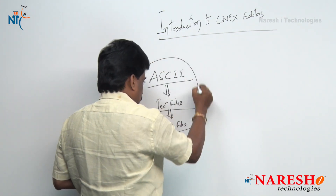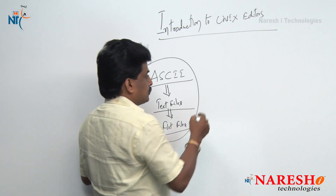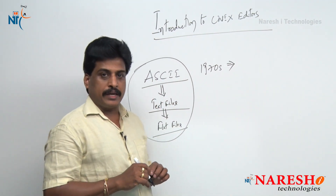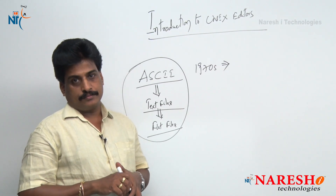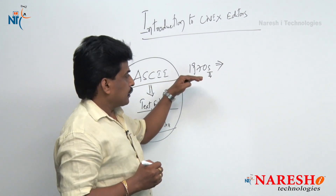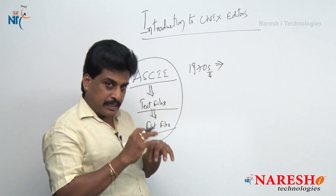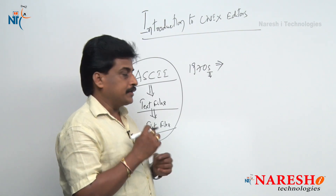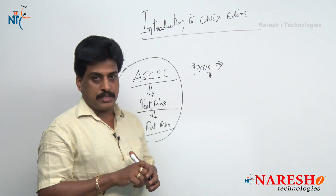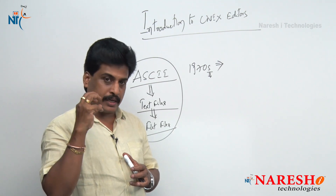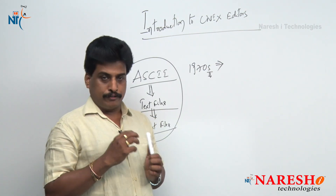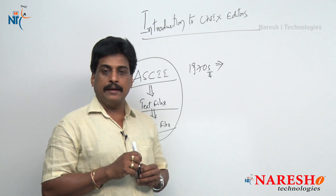In the 1970s — the 'S' indicates a decade, meaning 1970 to 1979 — the editor concept was first implemented by Ken Thomson, the B language father, at AT&T, popularly known as Bell Laboratories. The full form is American Telephone and Telegraph.